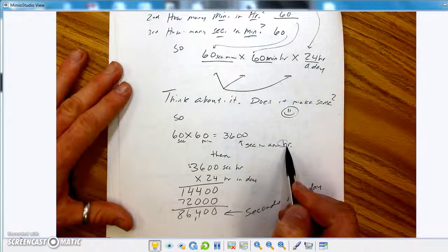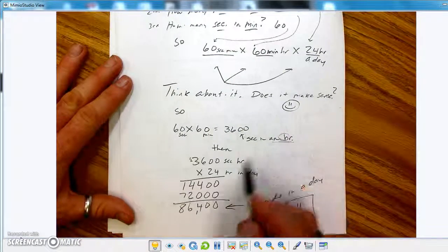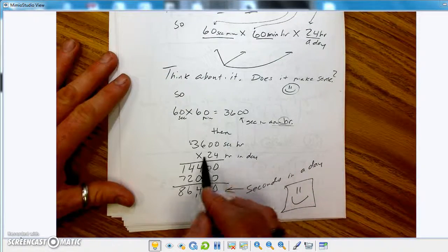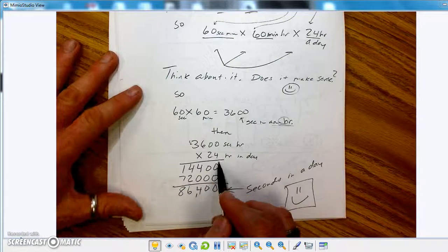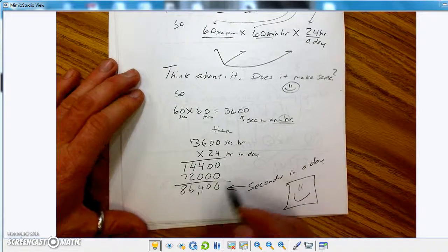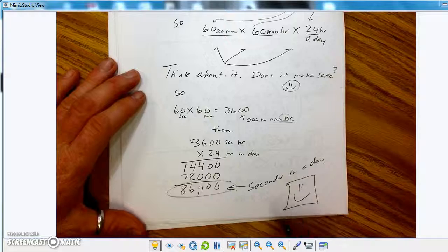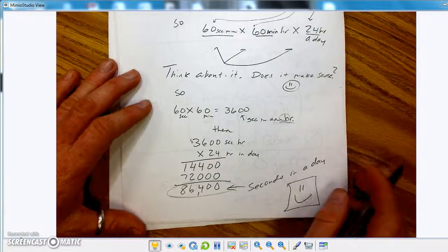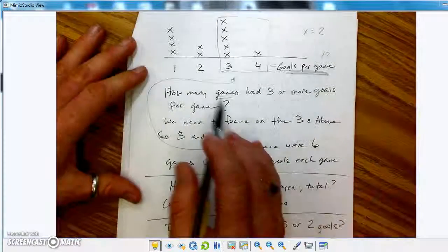Okay, so 60 seconds times 60 minutes ends up being 3,600 seconds in an hour. Make sense? Okay, and then you would take that hour, 3,600 seconds in an hour, and multiply it by 24, because there's 24 hours in a day. And that ends up getting you this big number. 86,400.